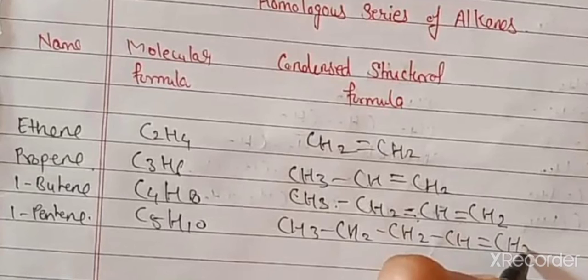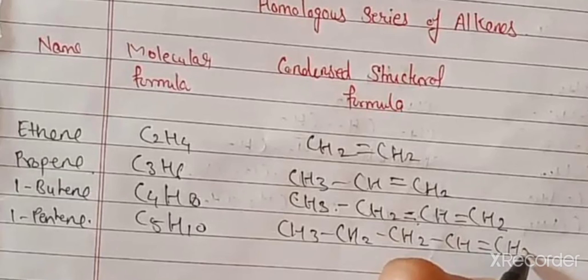Next, 1-pentene. Pentene means C5H10: CH3-CH2-CH=CH2. Why is it called 1-pentene? Meth, eth, prop, but, pent — here the double bond is on the first carbon atom. That is why it is 1-pentene.